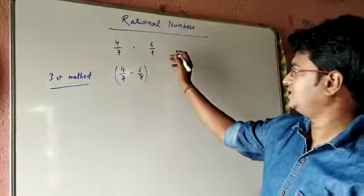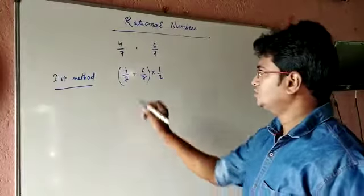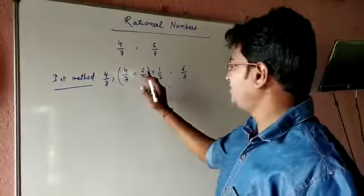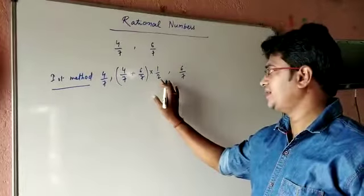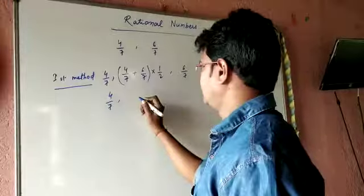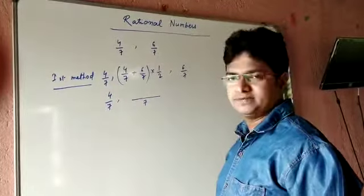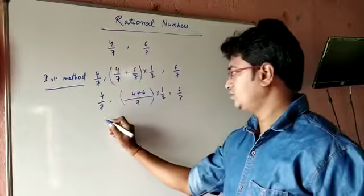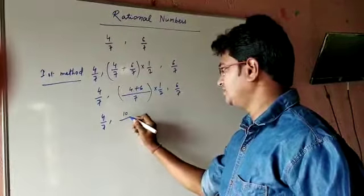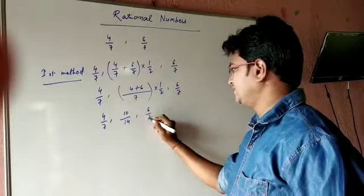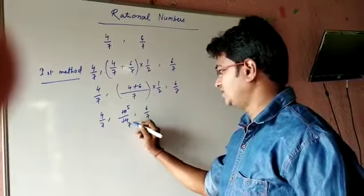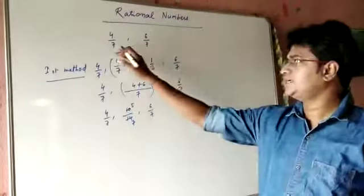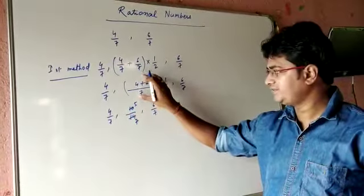For four by seven and six by seven, we add them and divide by two. Since the denominator is the same, we get four plus six over seven, multiplied by one by two. That gives ten by seven into two, which is ten by fourteen, simplifying to five by seven. So four by seven, five by seven, six by seven — the answer five by seven is coming in between, as expected.